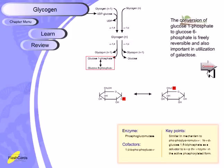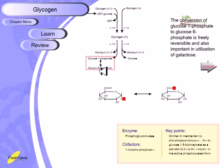The conversion of glucose-1-phosphate into glucose-6-phosphate is freely reversible and important for utilization of glucose, because the glycolytic pathway uses glucose-6-phosphate as an intermediate — not glucose-1-phosphate. So we need to convert glucose-1-phosphate into glucose-6-phosphate, which is just a transfer of the phosphate group from the first carbon position to the sixth carbon position, as shown in this picture.